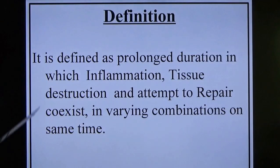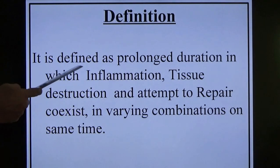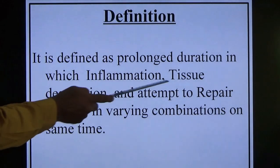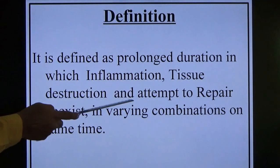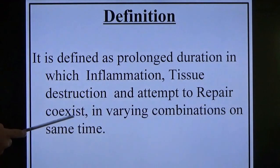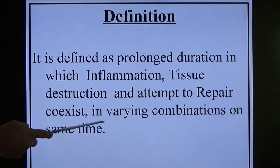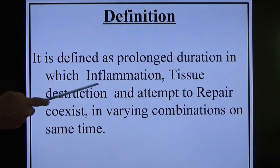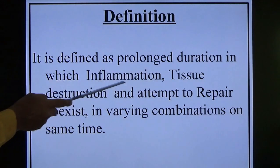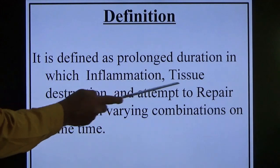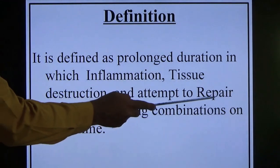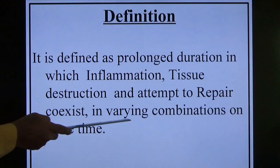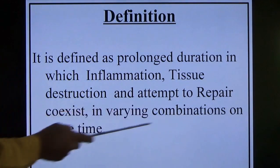Chronic inflammation is defined as a prolonged duration in which inflammation, tissue destruction, and attempt to repair co-exist in varying combination at the same time. That means chronic inflammation has characteristics of these three: inflammation, tissue destruction, and attempt to repair, which means healing, co-existing in varying combination at the same time.